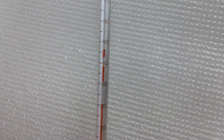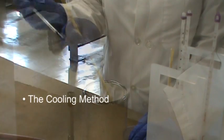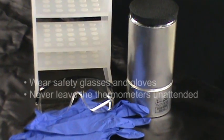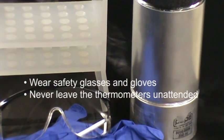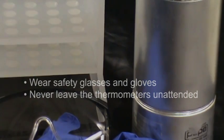There are two simple methods for reuniting separated thermometer liquid, a cooling method and a heating method. With either method, we strongly suggest you wear safety glasses and gloves and never leave the thermometers unattended while working with them.